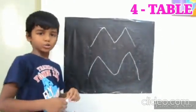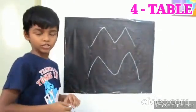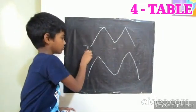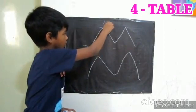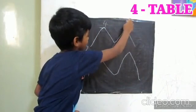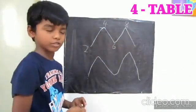Now 4 table is easy. 2, 4, 6, 8, for 10 we have to put 0.